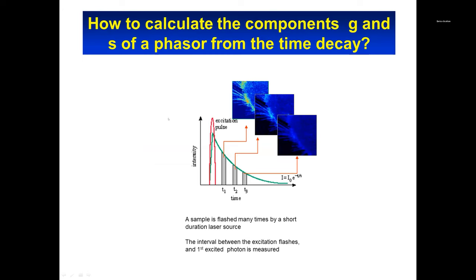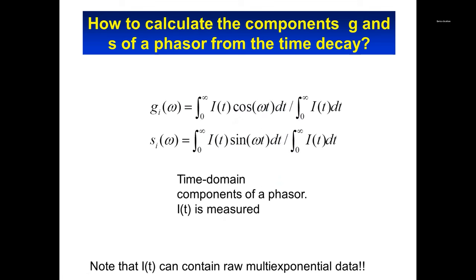We start with an excitation pulse, the decay, and want to measure that decay. In a FLIM experiment, the sample — meaning the image — is flashed many times by short directional pulses, generally femtosecond pulses. The interval between the excitation flash and the first photon emission is measured and you build a histogram. We follow Gregorio Weber's approach but in a slightly different way: Weber introduced G and S coordinates as cosine and sine transforms of the intensity decay, but we normalize the decay by the sum of all photons — the total intensity.